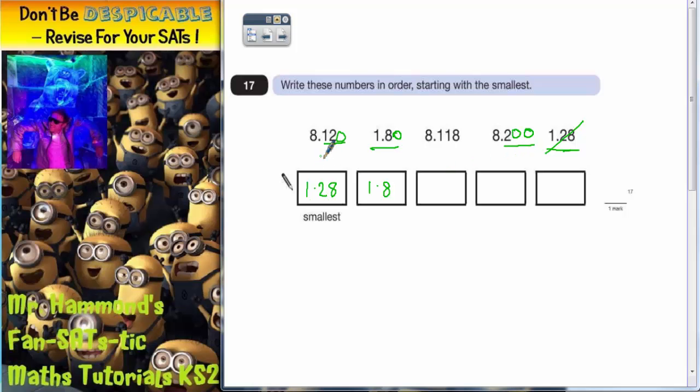You shouldn't really say 0.120 or 0.118 or 0.200, but it might actually help you to realize which one is smaller in this case. So 118 is smaller than 120 and 200, so this one must be the next smallest one.